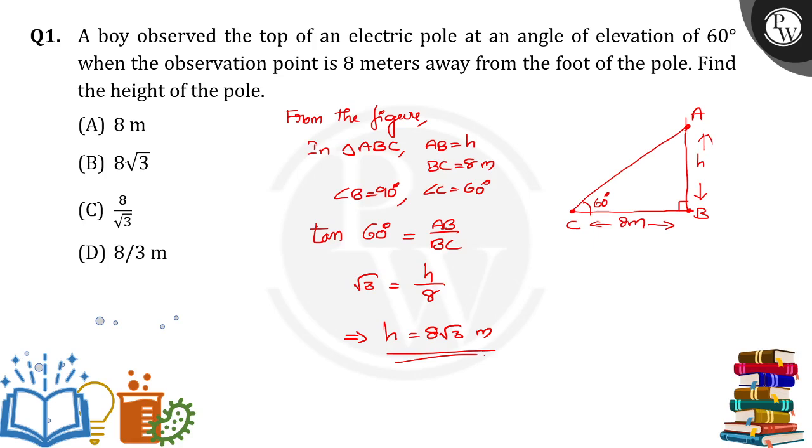So therefore, the height of the pole is equal to 8 root 3 meters. Option B is the right answer. Thank you.